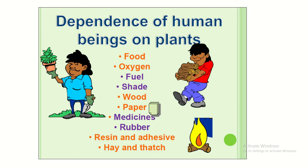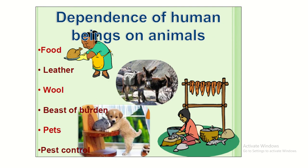Now, how do human beings depend on plants? Examples include: food, oxygen, fuel, shade, wood, paper, medicines, rubber, resin and adhesive, hay and thatch. Resin and adhesive is like a glue. How do human beings depend on animals? They depend on animals for food, leather, wool, beasts of burden, pets, and pest control. Thank you so much — if you have any problem, you can leave a comment.